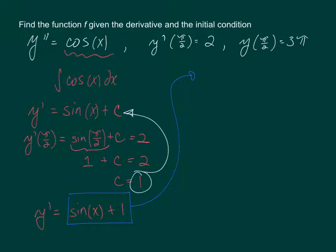So the antiderivative of sine of x plus 1 with respect to x ends up being negative cosine of x plus x plus C.